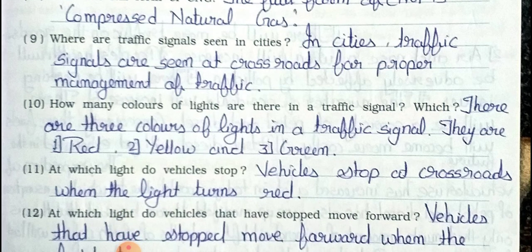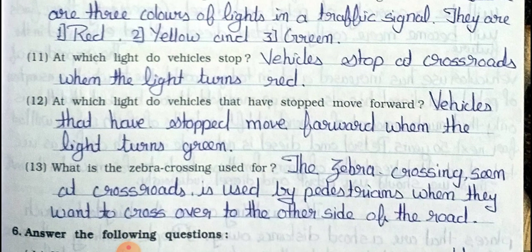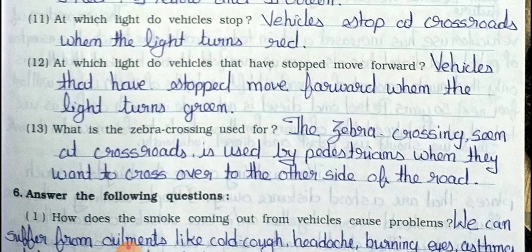Question 9: Where are traffic signals seen in cities? In cities, traffic signals are seen at crossroads for proper management of traffic. Question 10: How many colors of light are there in a traffic signal? There are 3 colors of lights in a traffic signal: red, yellow and green. Question 11: At which light do vehicles stop? Vehicles stop at crossroads when the light turns red. Question 12: At which light do vehicles that have stopped move forward? Vehicles that have stopped move forward when the light turns green.